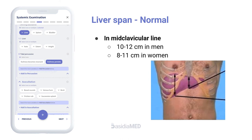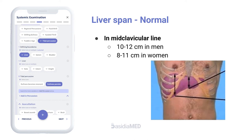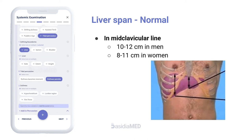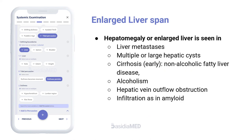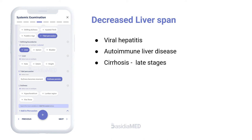Liver Span. The normal liver span in an adult, as judged by liver dullness, measures 10–12 cm in men and 8–11 cm in women in the midclavicular line. Enlarged liver span — hepatomegaly — is seen in liver metastases, multiple or large hepatic cysts, early stages of cirrhosis, non-alcoholic fatty liver disease, alcoholism, hepatic vein outflow obstruction, and infiltrations like amyloid. Decreased liver span is seen in viral hepatitis, autoimmune liver disease, and in late stages of cirrhosis.